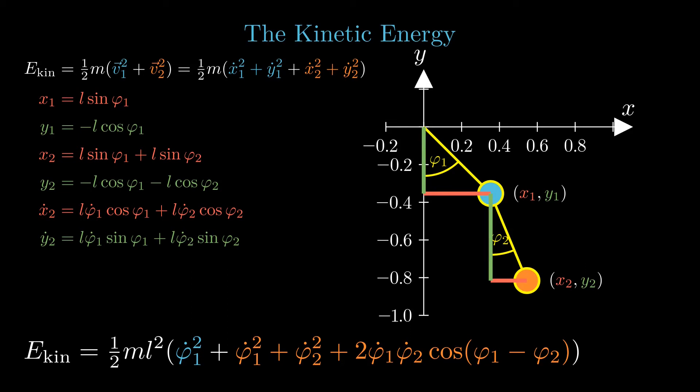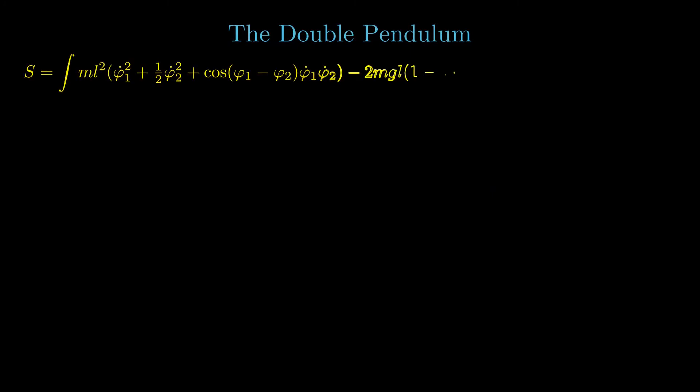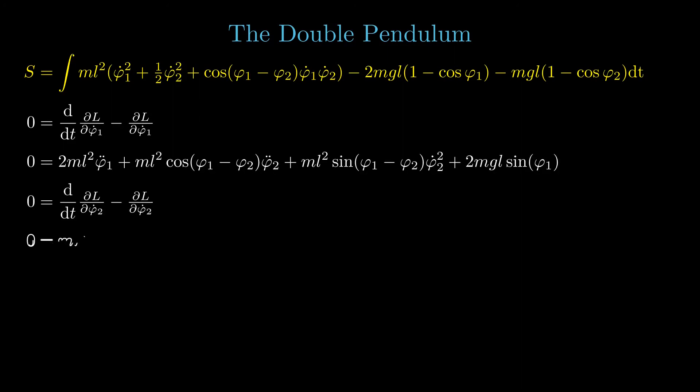Together with the simple terms for the potential energy, the Lagrangian of the double pendulum is constructed. Now it is straightforward but tedious to calculate the equations of motion. The Euler-Lagrange equations are first calculated for the variable phi1 and then for the variable phi2. Due to the interaction term, there is a mixing between the two variables.